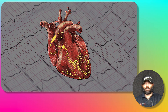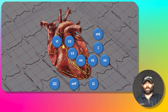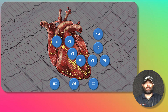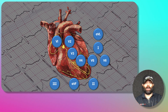In terms of where the leads sit, V1 and V2 are our septal leads, V3 and V4 are anterior leads, V5 and V6 are our lateral leads, 1 and AVL are our high lateral leads, and 2, 3, and AVF are our inferior leads.